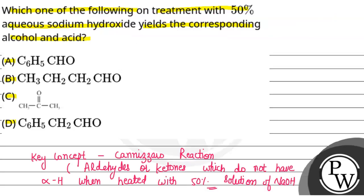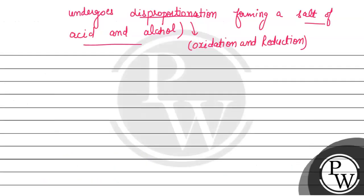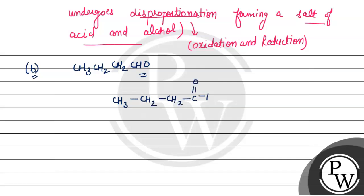Let's check option B first. Option B has CH3-CH2-CH2-CHO, which is an aldehyde. The carbon adjacent to the carbonyl group is the alpha carbon, and it has 2 hydrogen atoms present. So this compound has alpha hydrogen, and therefore it will not proceed under the Cannizzaro reaction. Option B is incorrect.